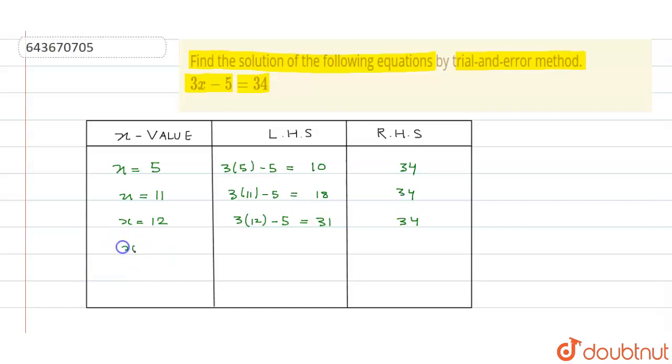Now we can put the value 13. 3 multiply 13 minus 5 equals 39 minus 5 equals 34, which is equals to 34. So we can say that x equals 13 and this is our answer. Thank you.